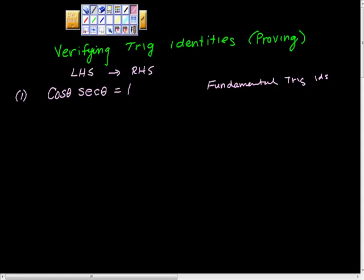Those are the reciprocal identities. The tangent and cotangent identities is the second group. And the third group is the Pythagorean identities. Altogether, there should be eight identities.